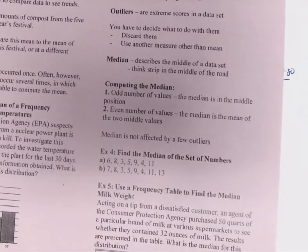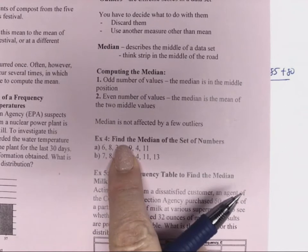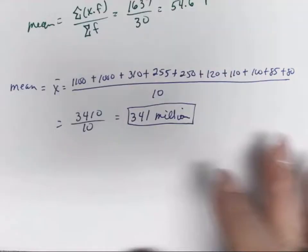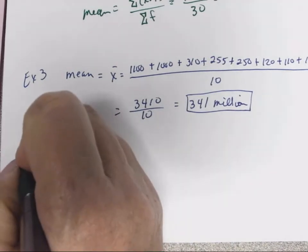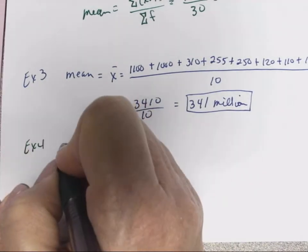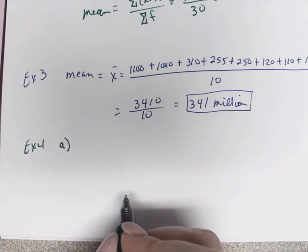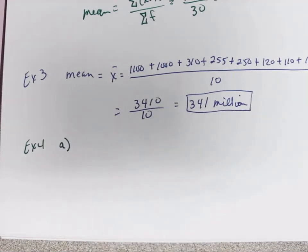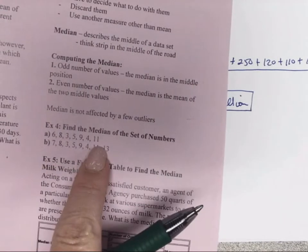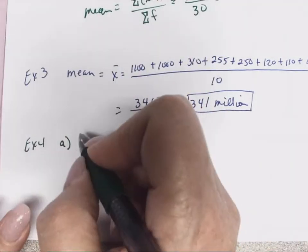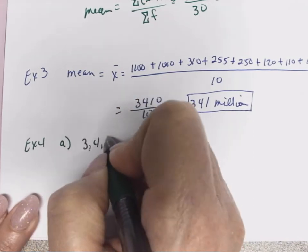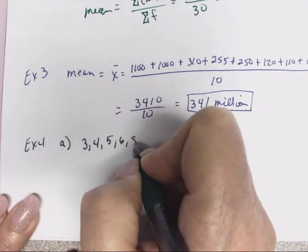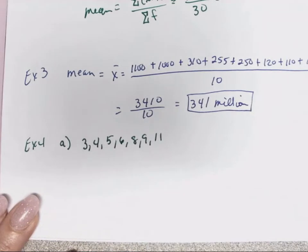For example four, we're going to find the median of two sets of numbers. We're on part A. We're going to put our numbers into numerical order. We were given the list, I'm just going to put them in numerical order because we have to do that in order to find our median. So we have 3, 4, 5, 6, 8, 9, and 11.